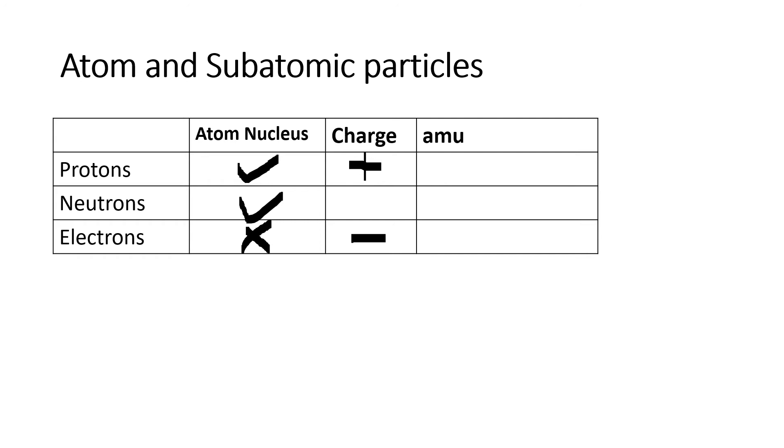What is the atomic mass unit of each of the subatomic particles? Think of it as mass or weight, although weight is not a proper way to look at it. Protons have a mass of one. Neutrons, one. Electrons are nearly weightless, so we can say zero.